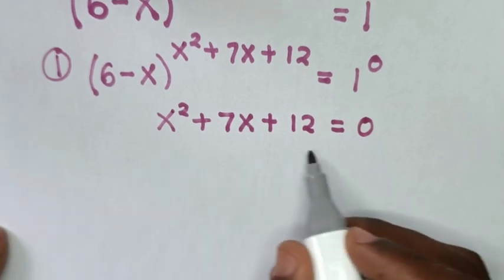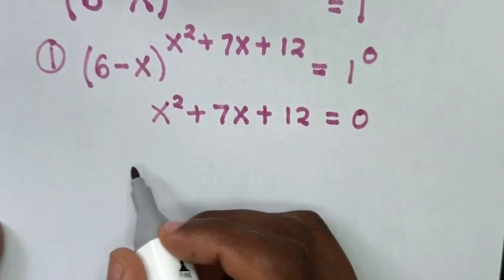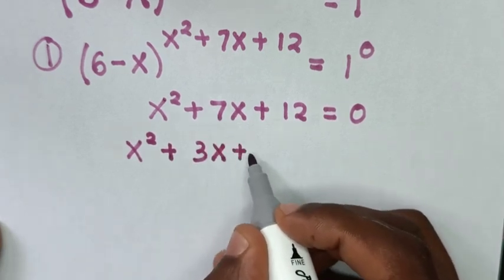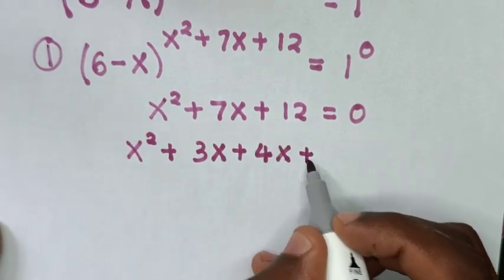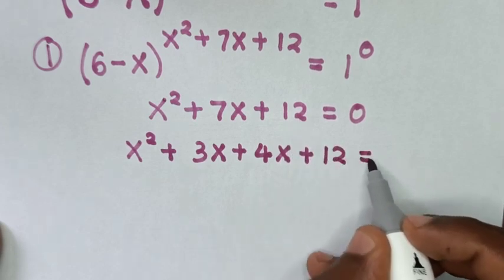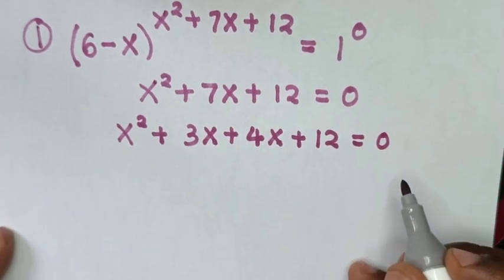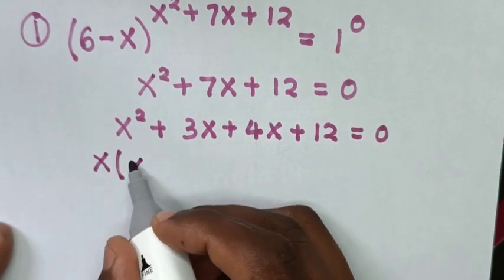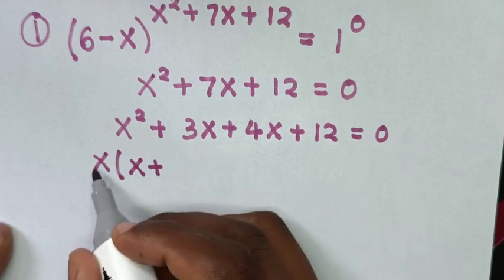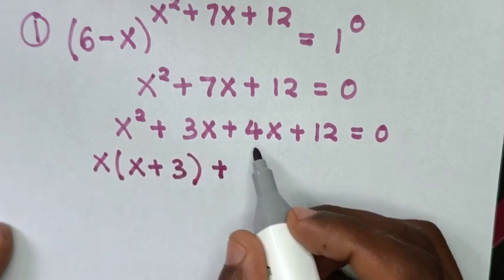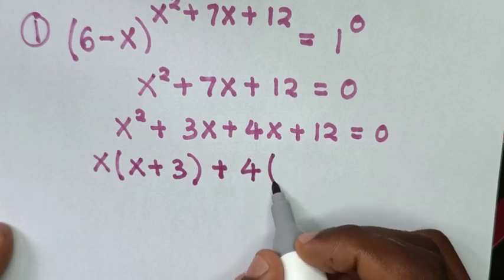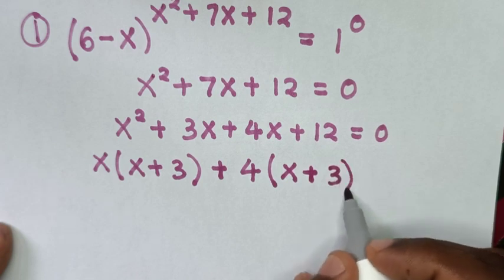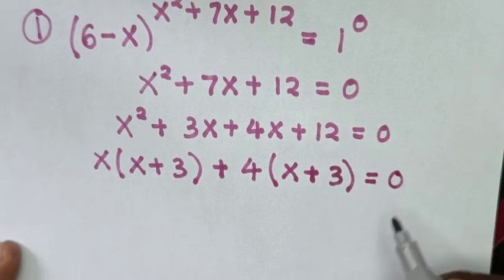Then we'll factorize this quadratic equation. So x squared plus 7x becomes 3x plus 4x, plus 12 equals 0. In here, x is common, so we take x out of the bracket: x(x plus 3), plus in here 4 is common, giving 4(x plus 3), equal to 0.